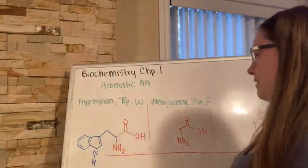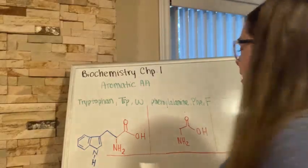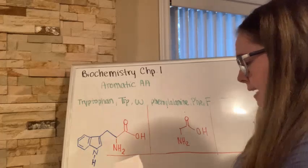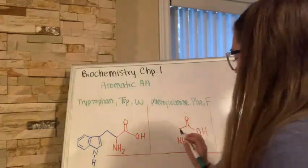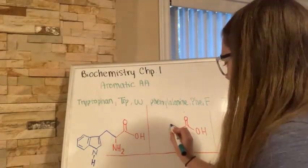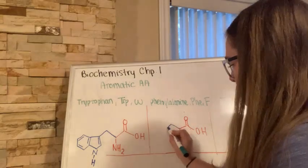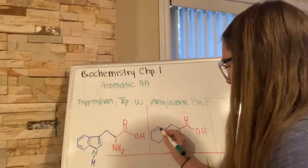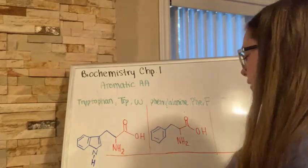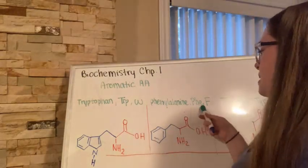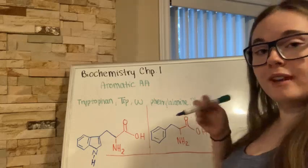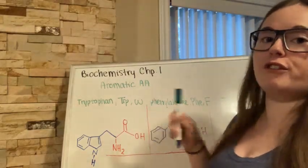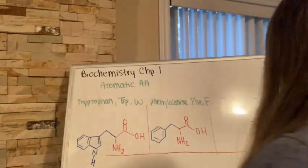Phenylalanine is our next aromatic amino acid and is quite simple in comparison — it just has an aromatic ring. Its three-letter abbreviation is P-H-E and its one-letter abbreviation is F, which makes sense for phenylalanine.